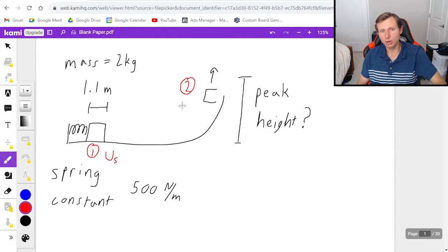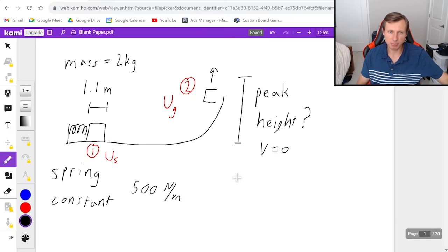Then at point two we definitely have gravitational potential energy UG. That's because we're clearly a height above the ground. I think it's also evident that there's no spring here. So there's no spring potential energy. So the question is, is there kinetic energy? And the answer is no, because at the peak height your velocity is zero at the peak height specifically. For that reason it's only gravitational potential energy at point two.